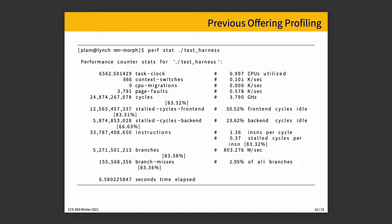We can see how much CPU it used — a fair amount — and there were 666 context switches in that time, zero CPU migrations (that's where it gets reassigned from one core to another), and 3,791 page faults, something we could hopefully reduce. Of that, it used 24 billion cycles.